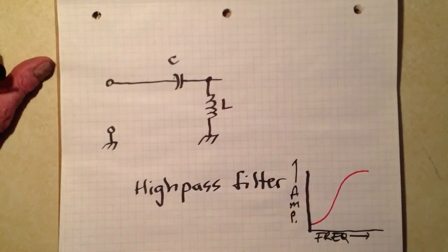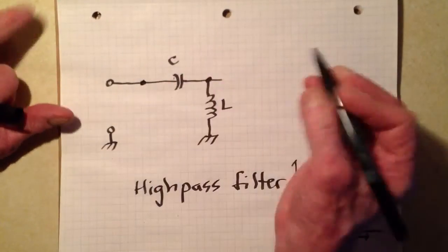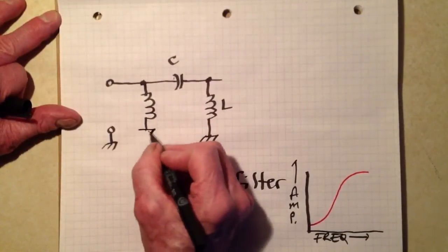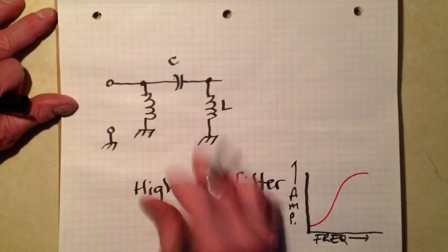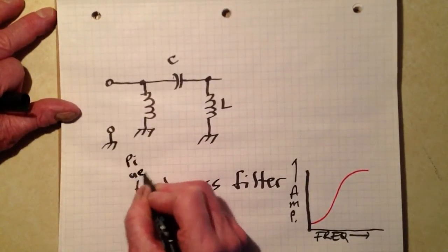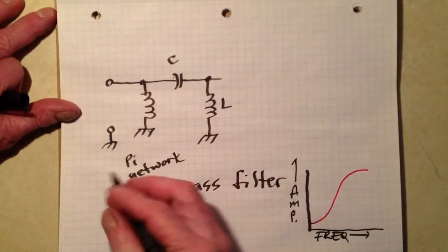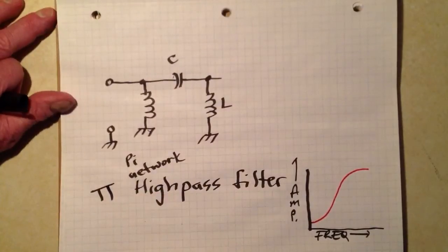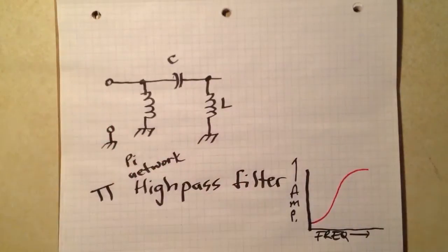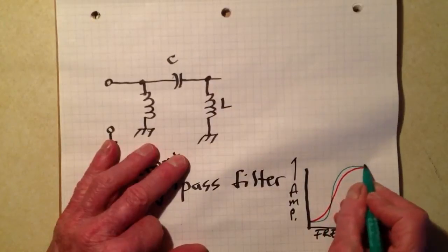That's an L network. We can add another inductor and get a pi network, just like we did before with the low-pass filter. Now we have a pi network. It derives its name from this configuration, looks something like a Greek letter pi. That will provide a little bit sharper of a response.